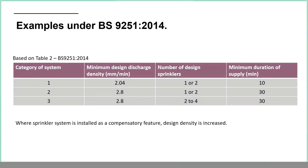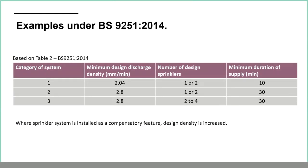Once you've decided the category, you apply it to table two, which gives the minimum discharge density and the number of design sprinklers — the number of heads allowed to operate simultaneously. Under 9251 that's a maximum of four heads. Statistics show the vast majority of cases are controlled by one head, occasionally two; three or four is very rare. The table also gives the minimum duration.